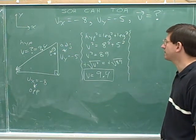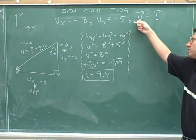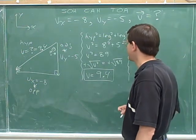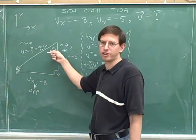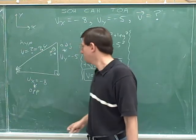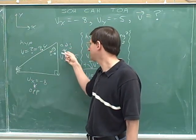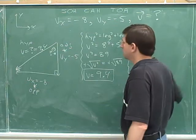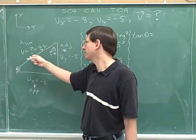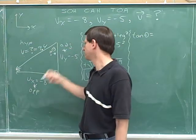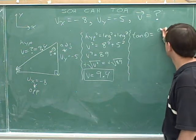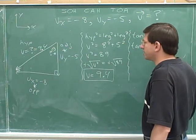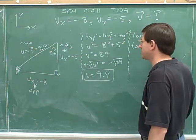We're not done until we've also gotten the direction of the overall vector. When someone refers to the vector with an arrow over it, they mean the overall vector, which includes the direction. We're going to indicate the direction by figuring out this angle. We know the opposite and adjacent sides, so we should use the tangent. The length of the opposite side is 8 and the length of the adjacent side is 5.